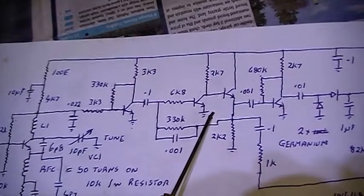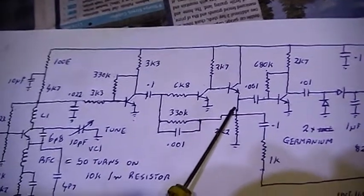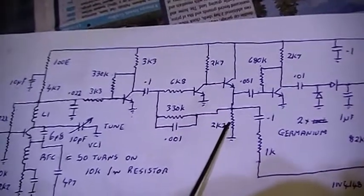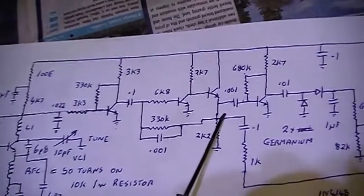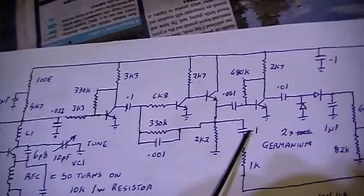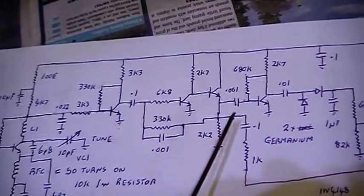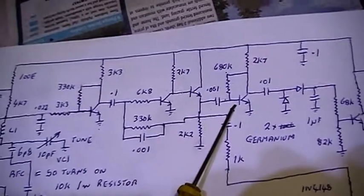We have an emitter follower here. This gives us a fairly low impedance output, so that by adjusting either the volume or the squelch sensitivity, one won't interact with the other.